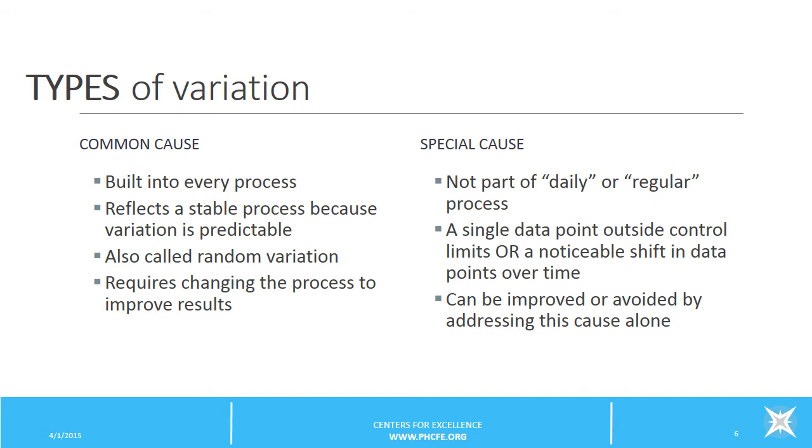To improve common cause variation, you must change the process. In contrast, special cause variation is not an everyday part of our processes and can be shown by a shift in the data points or by a single data point outside of our control limits. To improve special cause variation, you must address the cause of the results alone, you investigate it, versus actually changing the process.